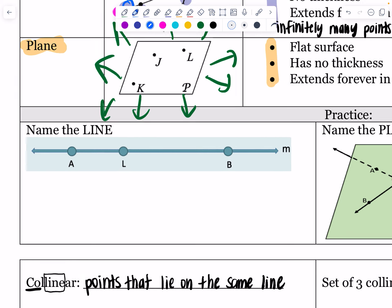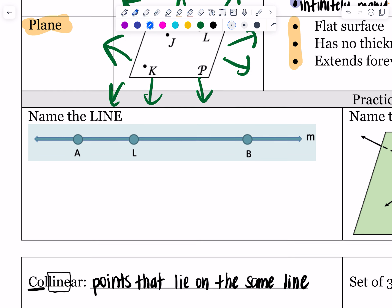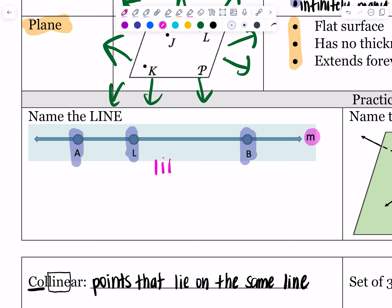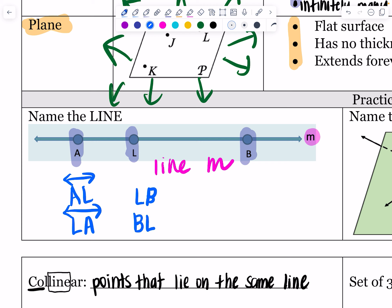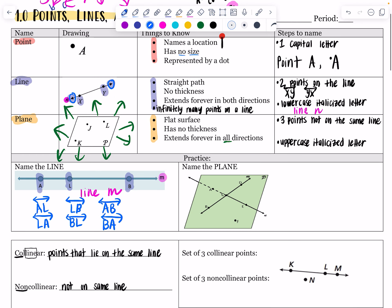Now let's do some practice with notation. Let's name the line in all the ways we possibly can. First, the M is lowercase and italicized — that's the lazy way. The points actually on the line are A, L, and B. So the lazy way is line m. You can also name a line with any two points: AL, LA, LB, BL, AB, and BA — all seven of those are the same line, just different ways to name it.